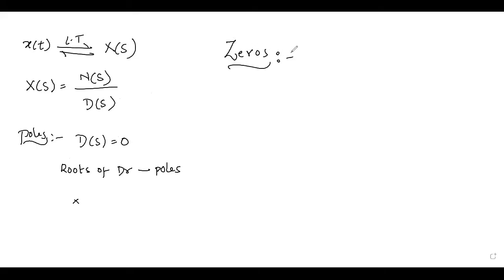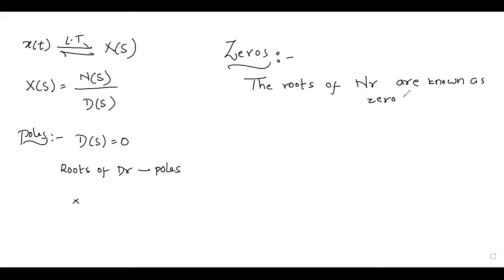Put the heading 'Zeros.' Zeros are values which make the function value to be zero. Write the definition: the roots of the numerator are known as zeros. How do we find these zeros? By equating the numerator function N of s to zero and finding the solution — finding the factors of that particular numerator polynomial. Those are nothing but zeros, which make the numerator zero, and hence the entire function zero. That's why the name 'zeros' is given.